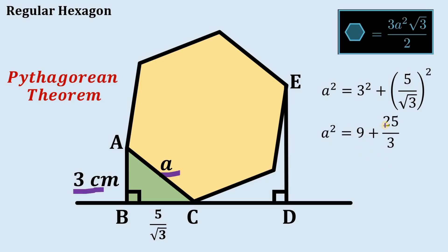Adding 9 to 25 over 3 gives us 52 over 3, and that is the value of a². We don't need the value of a itself — we only need a² to get the area of this hexagon.